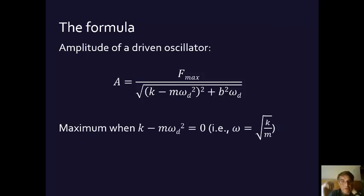So, the maximum is going to be where this term becomes zero. That's going to be the maximum amplitude when this term becomes zero. So, when k minus m omega_d squared equals zero, you can see that if we solve for omega_d, that's when omega_d equals the square root of k over m.